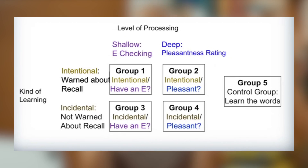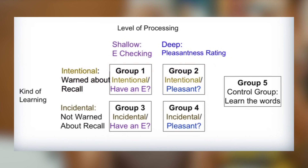This is true regardless of whether you intend to learn the material or not. To illustrate this point, I want you to imagine you are in a classic psychology experiment by Thomas Hyde and James Jenkins from 1969. The basic design of their study used five different groups of participants, each presented with a list of 24 words. The first variable was whether you knew you'd have to recall the words afterward — intentional versus incidental conditions. If you weren't forewarned about the recall test, it's like taking a surprise pop quiz and any learning that occurred was incidental.